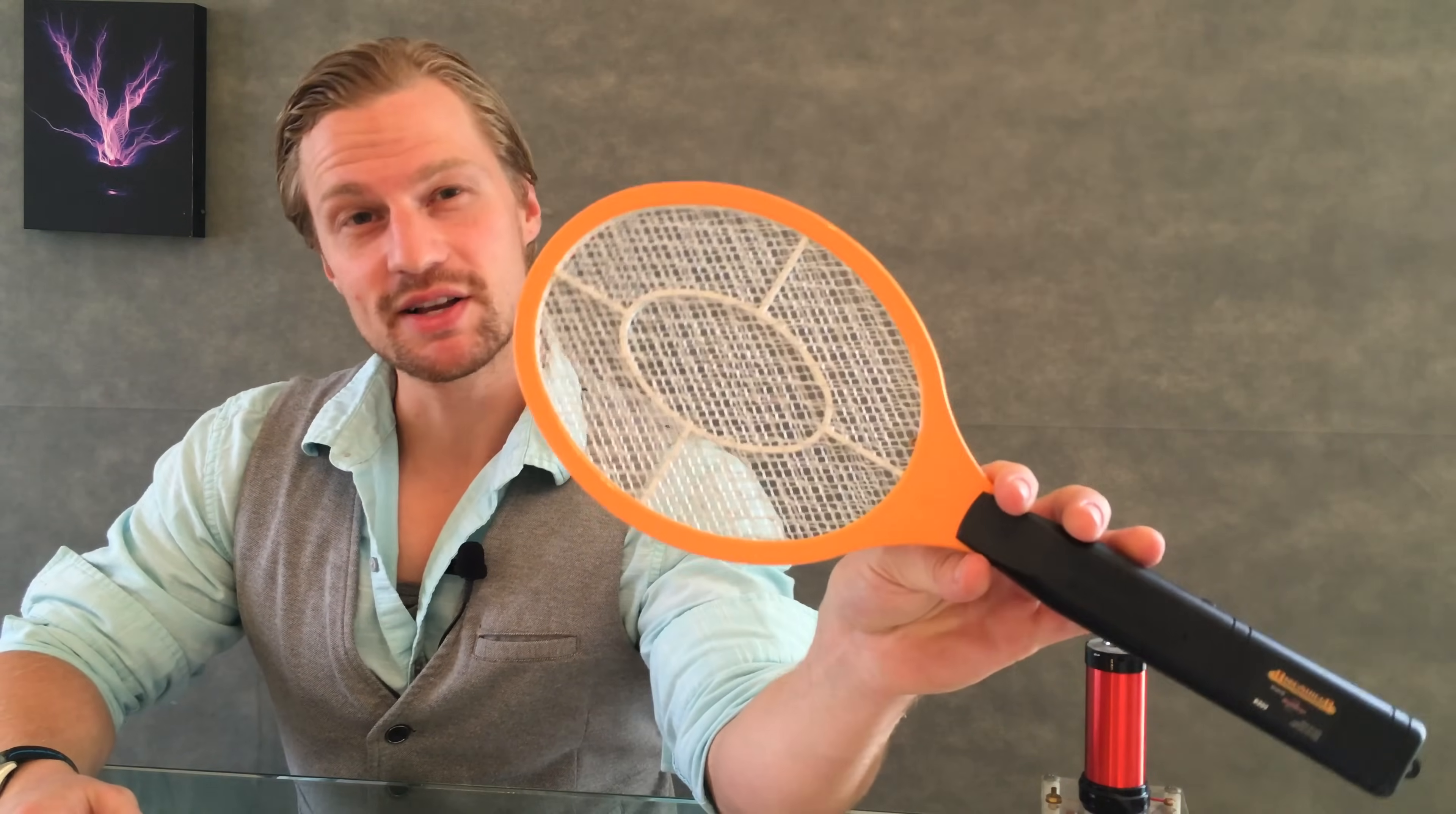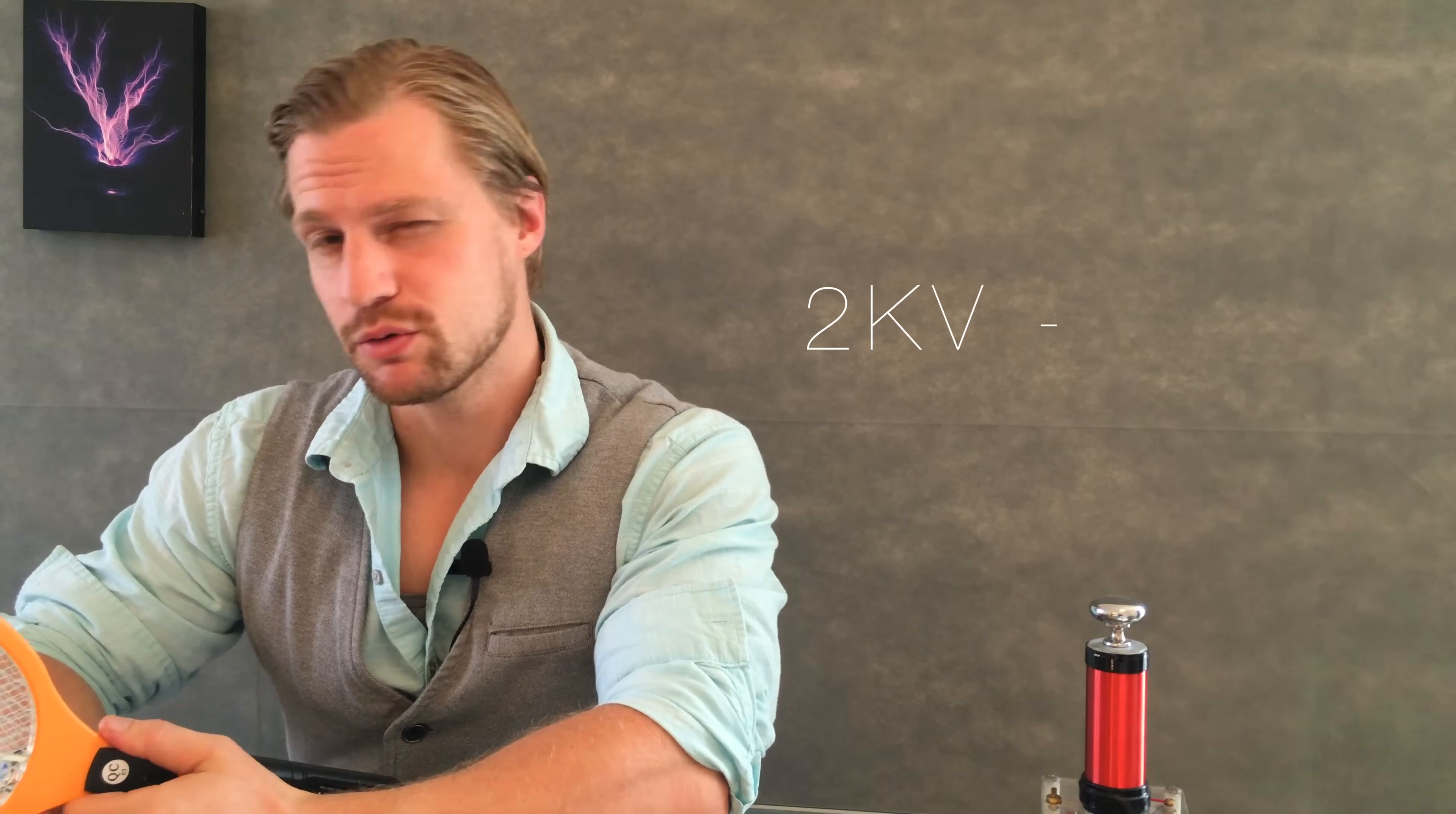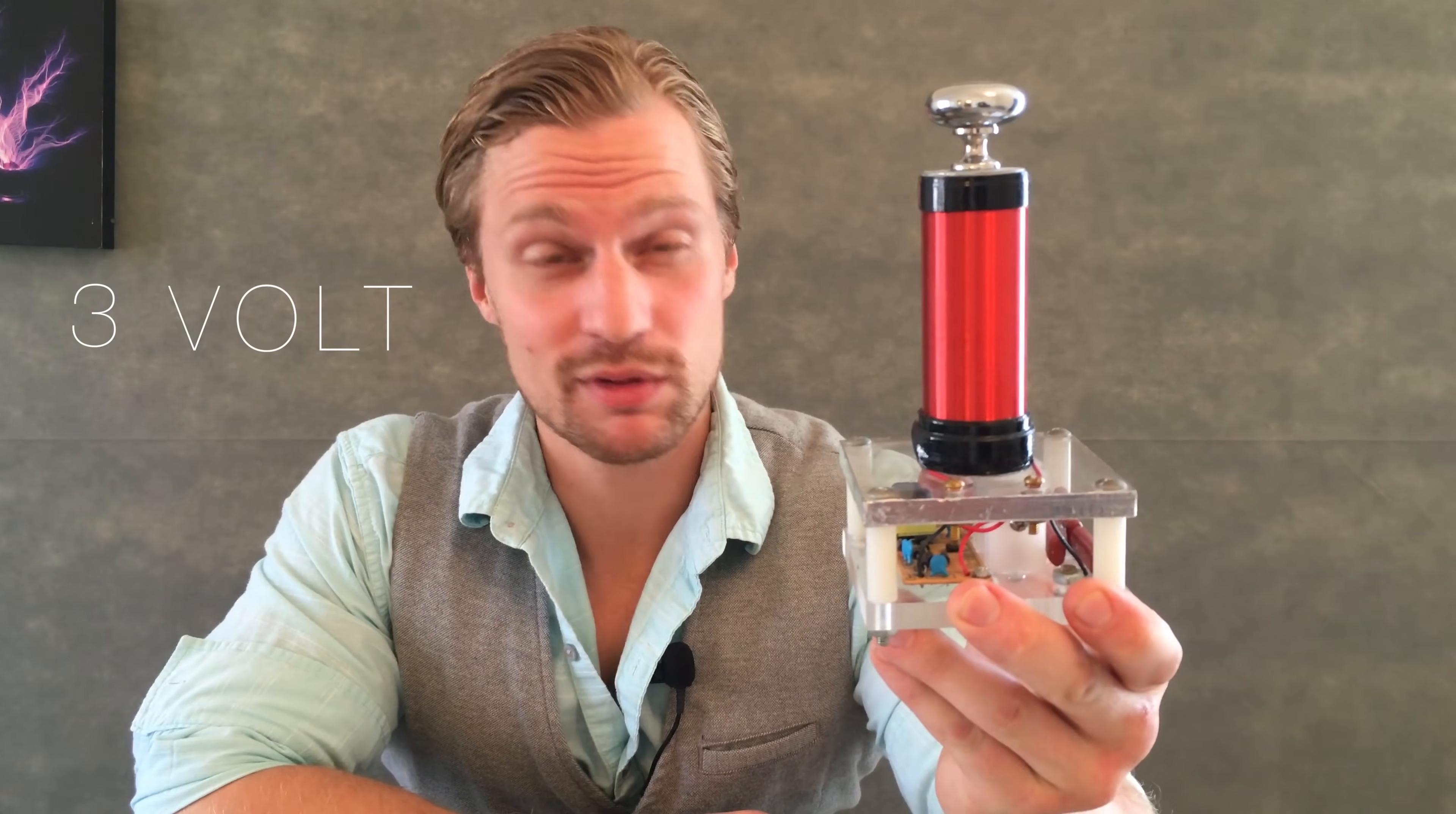Hey it's Jay and you're watching Plasma Channel. Ever seen one of these? These are bug zapper rackets. Inside of them is a circuit that produces about 2 to 3,000 volts. So today we're gonna turn this into this. A 3-volt Tesla coil.